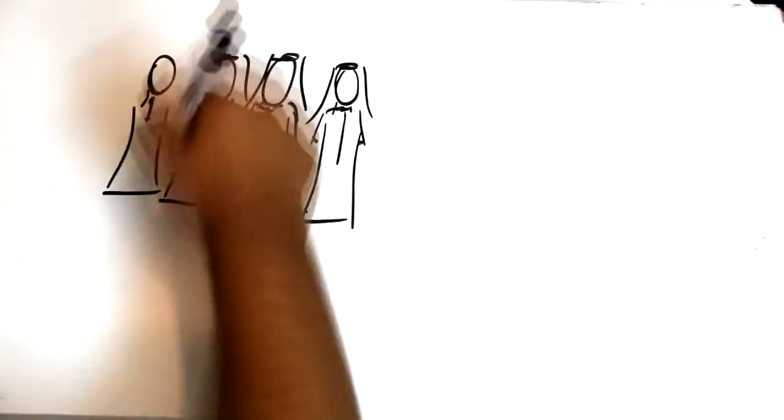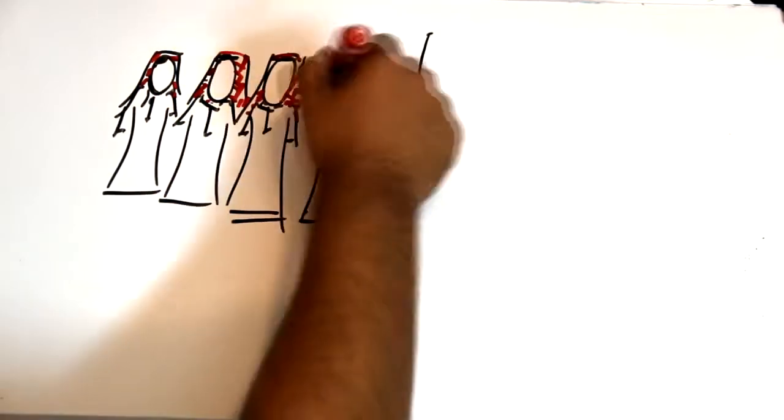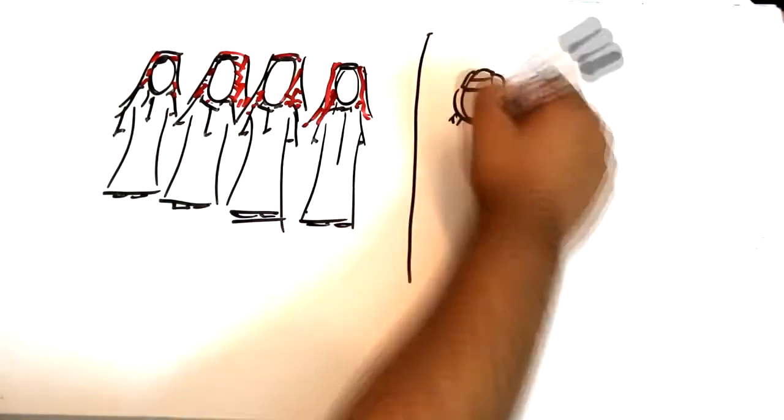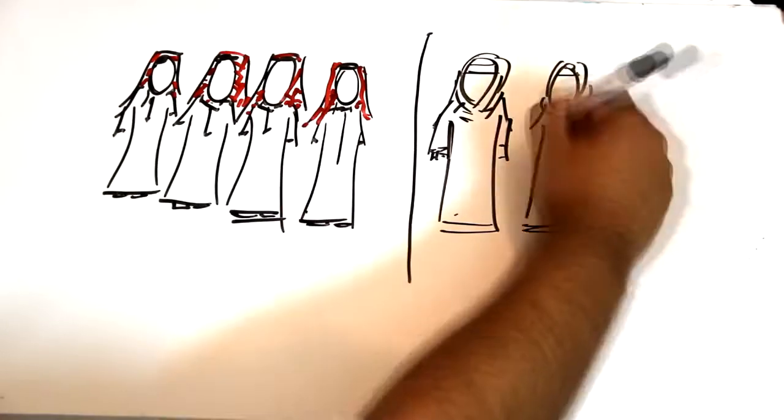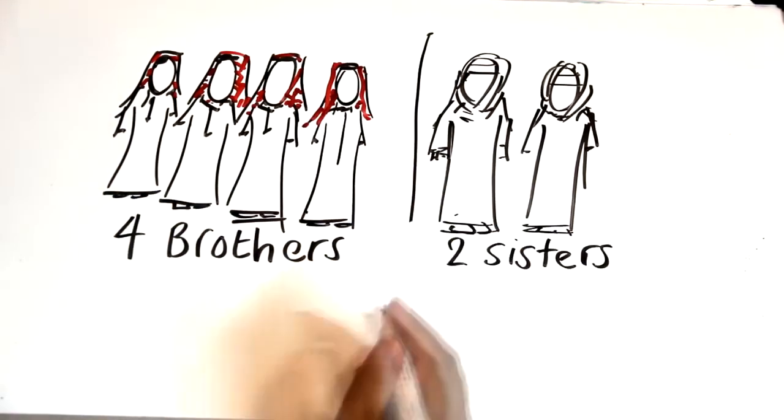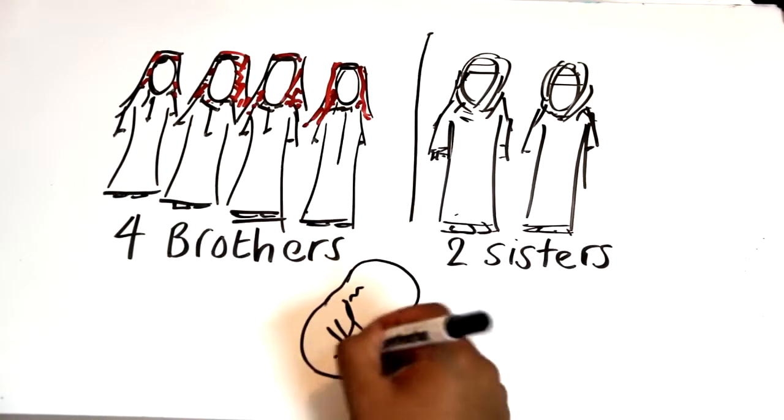I have four brothers, Nizar, Mansoor, Sultan, and Fahd, and two sisters, Amani and Amal. I am the second eldest, and we have a baby on the way. I don't know if it will be a boy or a girl.